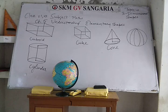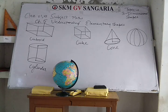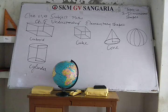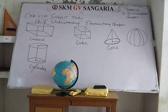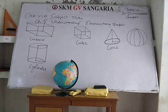In Exercise 5.9 you will match shapes. The first will be matched with the second. Cone will be matched with the second figure. Sphere will be matched with the fourth. Cylinder will be matched with the fifth. Cuboid will be matched with the third figure. And pyramid will be matched with the first.